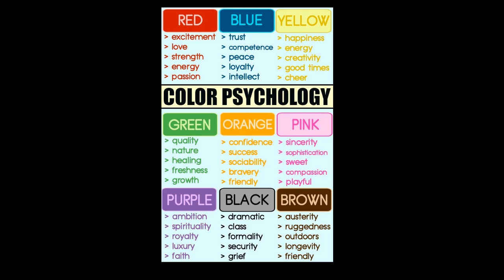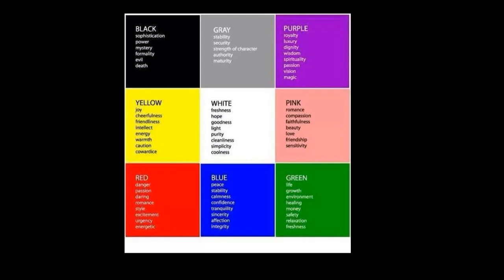These don't always cover everything, but we can start to break down what colors mean. Black: sophisticated, power, mystery, formality, evil, and death. Yellow: joy, cheerfulness, friendliness, intellect, energy, warmth, caution, and cowardice.